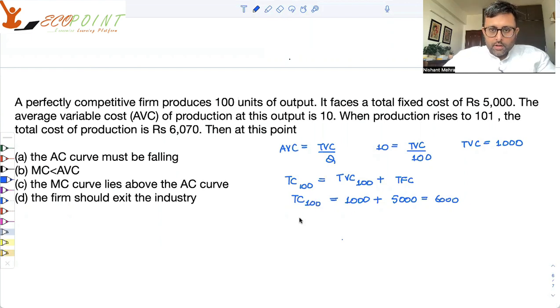Total cost of 101 units. When the production rises to 101, the total cost is 6,070.